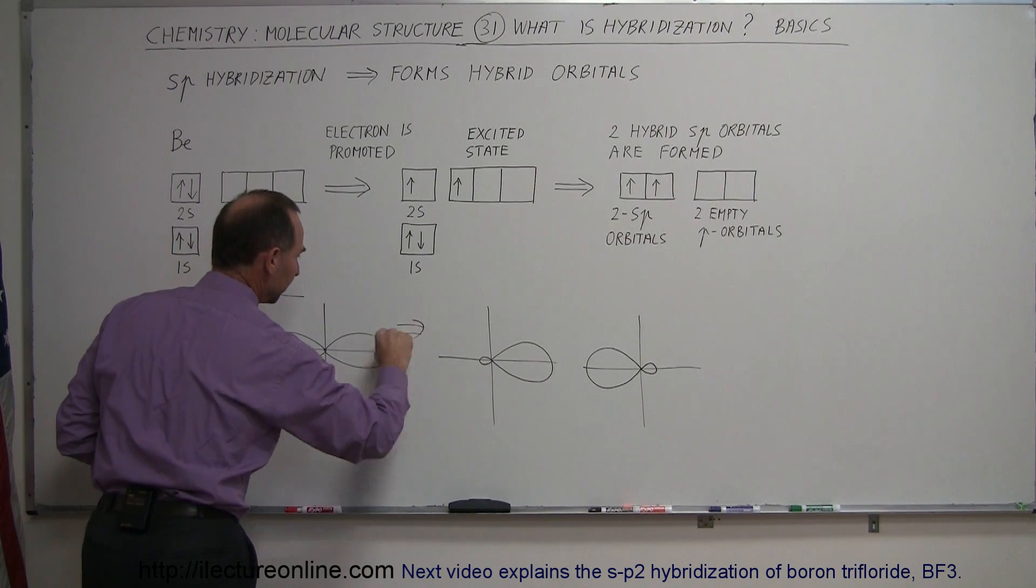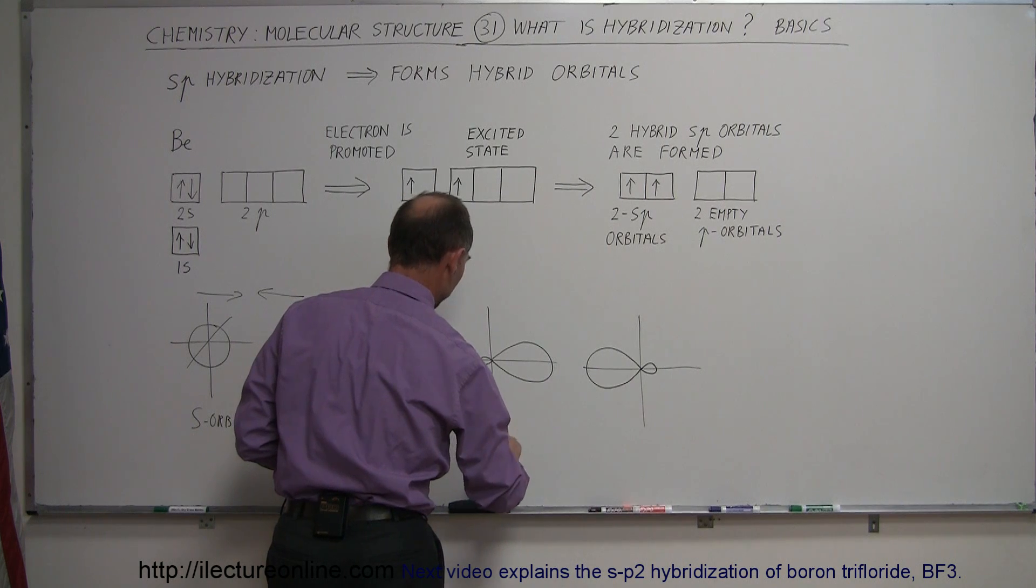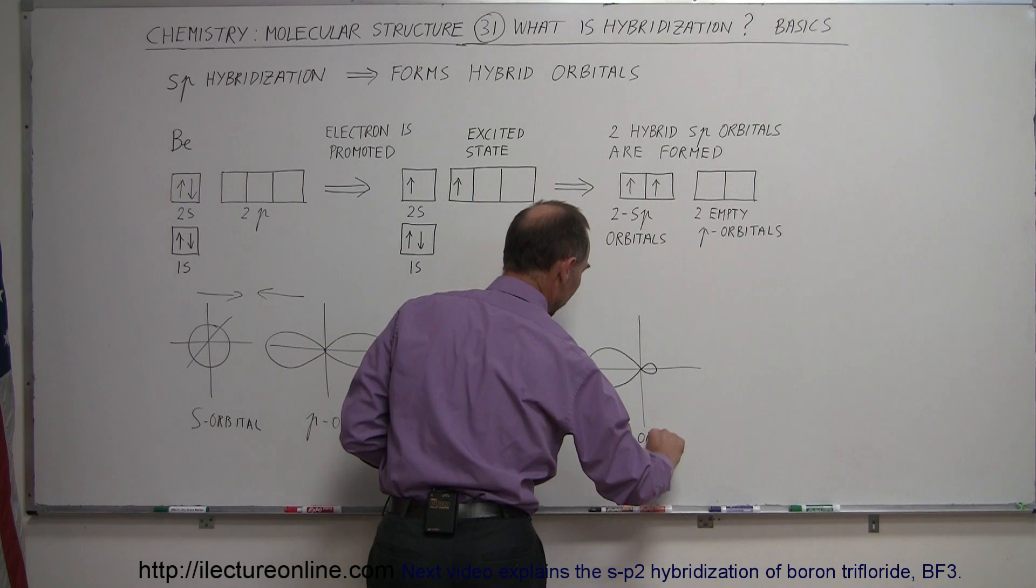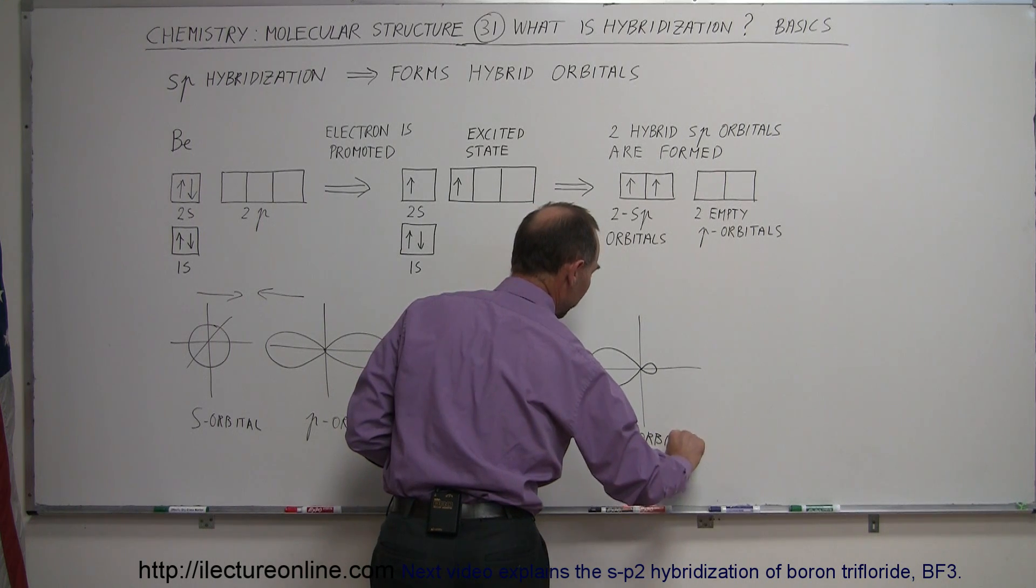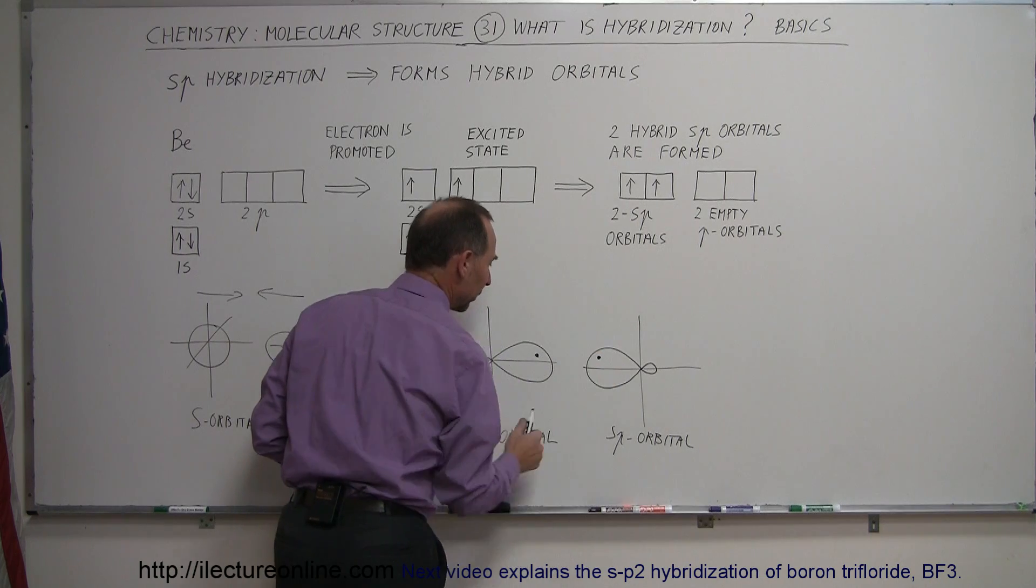And it will then form two sp orbitals. So we have an sp orbital here and we have an sp orbital there. And each of the two sp orbitals has a single electron in it. There we go, single electron.